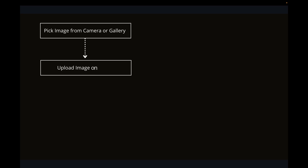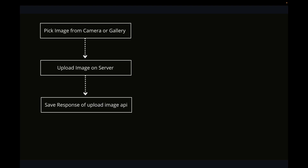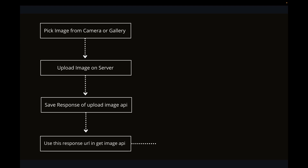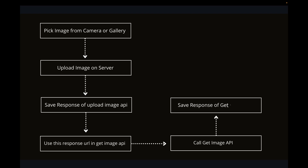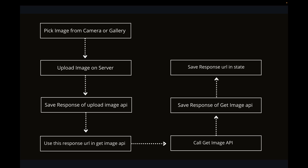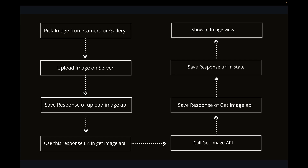Flow diagram: First we will pick an image from camera or gallery. Next we will upload the image on server. Next step is to save the response of the upload image API — we will save the image response because we will use it in the GET API. Then use this response URL in the GET API, call the GET API, save the response of the get image API to get the URL, and save this URL in state because we will show it in an image view.